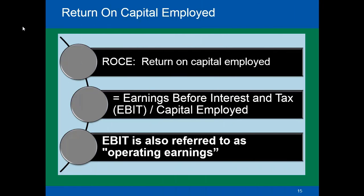Now we'll understand Return on Capital Employed (ROCE). This is the return a company has earned on its total capital, whether it is borrowed, from shareholders, or from free reserves. The formula for ROCE is EBIT divided by total capital employed, giving the return as a percentage. EBIT is basically the operational profit of the company derived from selling its goods and services.